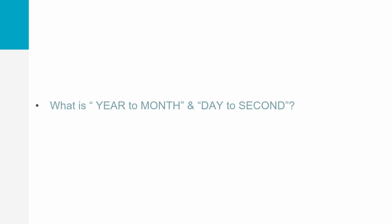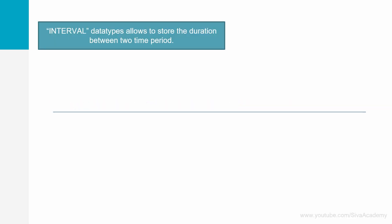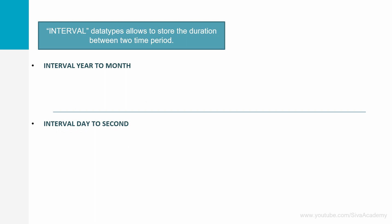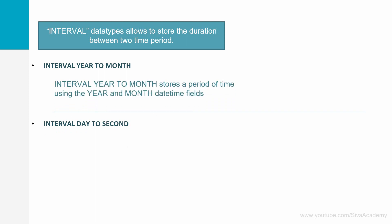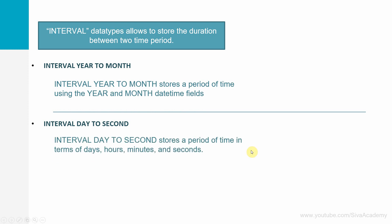Let us focus on the day to second in this video. Just to give you a quick introduction: the interval data type will help us to store the duration of two time periods. Until Oracle 23c, Oracle provides two data types — one is interval year to month and another one is interval day to second. Interval year to month will help us to store the duration in terms of year and month. If you want to store the duration in a much more granular manner, then we can use the interval day to second, which stores duration in terms of days, hours, minutes and seconds.